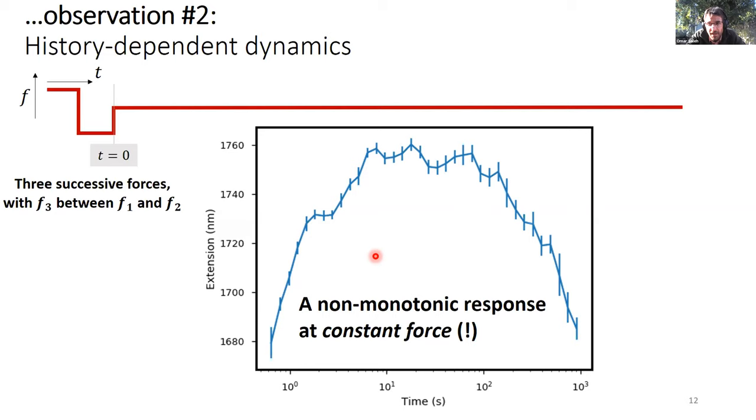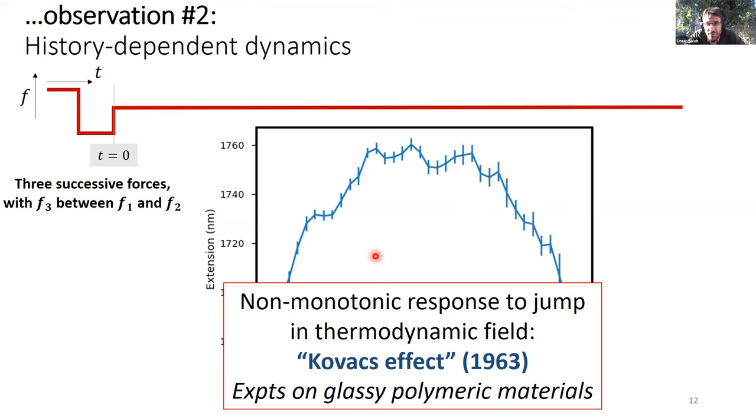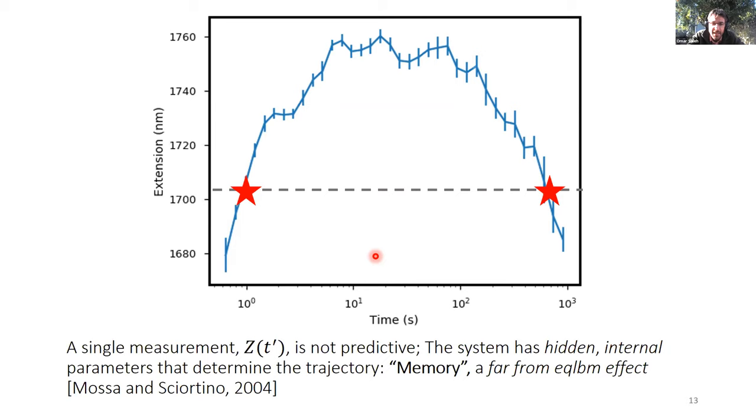So this is quite interesting. It's a well-known effect in the polymer literature, effectively the plastics literature. It's called a COVAX effect. COVAX measured this in plastics by doing temperature jump experiments and looking at volumetric changes in plastics. And what it indicates is that this system is extremely far from equilibrium. And you can demonstrate that, as nicely pointed out in this paper by Moss and Scuritino, by the following thought experiment. Say you measure extension at a certain time, and you measure an extension given by this gray dashed line. Because it's non-monotonic, there's two places on the curve that have that extension. In one case, it goes up and the other case, it goes down. Therefore, no matter what instantaneous information you have, you cannot predict the future extension of the system. You need to know something about the past.